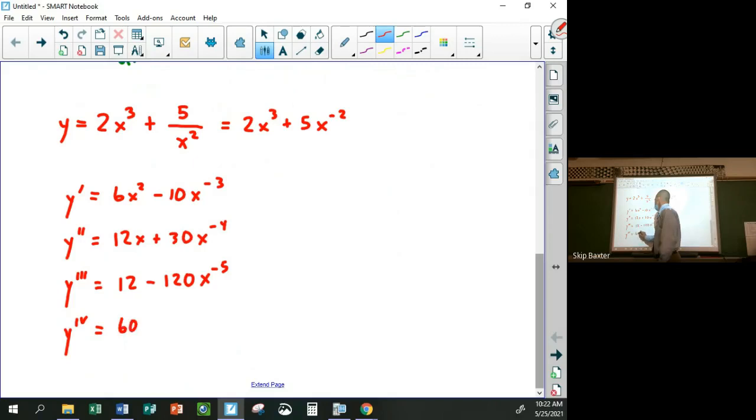plus 120 times 5, which is 600x to the negative 6. Like that's, now it's only one term. And it would be one term for the rest of all time if I wanted to find every other derivative.